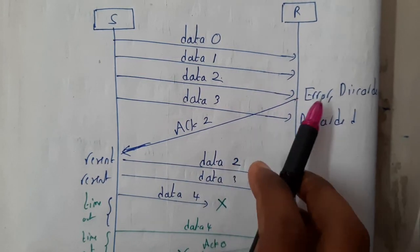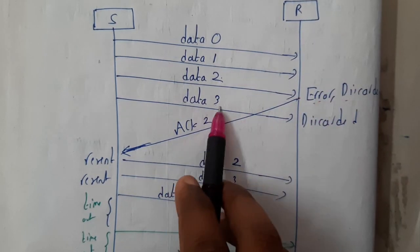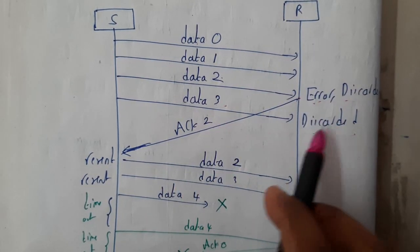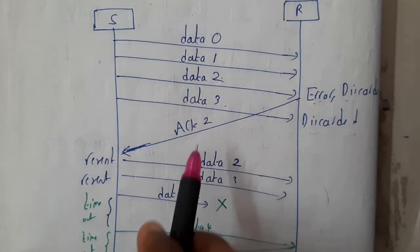D2. So data error, we discarded the whole thing. So even if you receive the data 3, you will be discarding it guys. Because however many data you receive, you will be just discarding them because we will be rolling back to N steps back. So now you got acknowledgement 2.